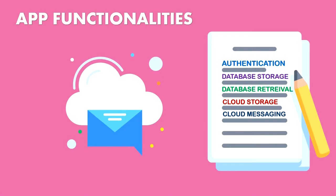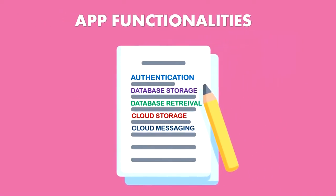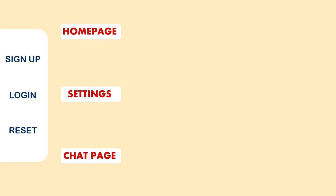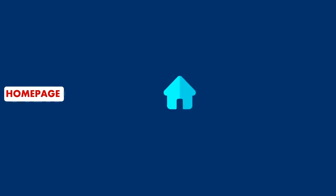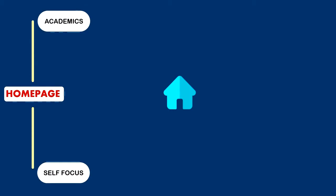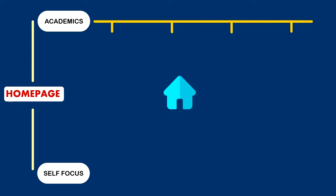Let us understand the framework of the application. After authentication, the user is redirected to three main options: a homepage, chat page, and settings page. On the homepage, contents are divided into two categories based on student necessity — academics and self-focus. In the academics section, there are student center, project, study material, and schedule.